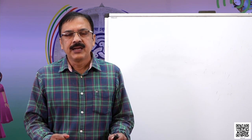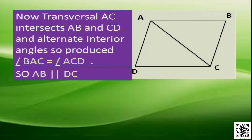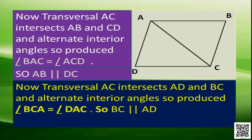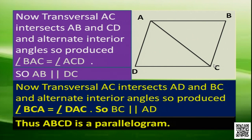Transversal AC intersects AB and CD. The alternate interior angles BAC and ACD are equal, so AB is parallel to CD. Similarly, transversal AC intersects AD and BC. The alternate interior angles BCA and DAC are equal, so BC is parallel to AD. In quadrilateral ABCD, opposite sides AB and CD are parallel, and AD and BC are parallel. Therefore ABCD is a parallelogram.